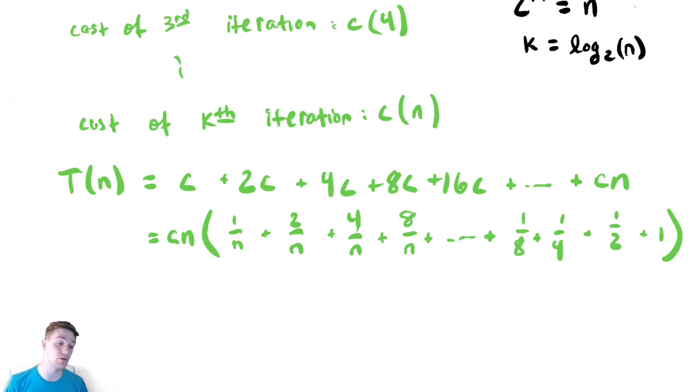I'm going to write it in the exact opposite order and it will turn out to be much, much, much nicer to look at. So I'm going to reorder the terms and write the largest term first, which is 1, plus a half, plus a fourth, plus an eighth, plus all the way down until we get to 1 over n.